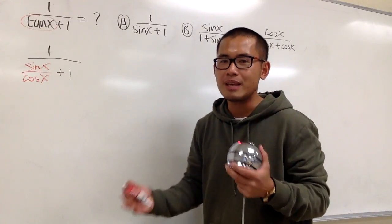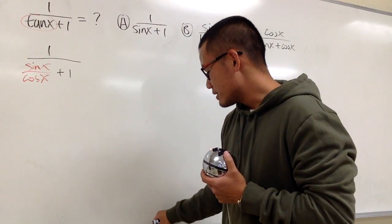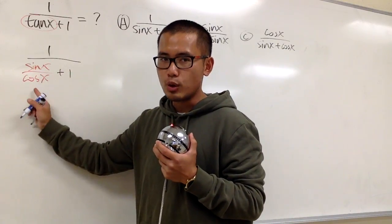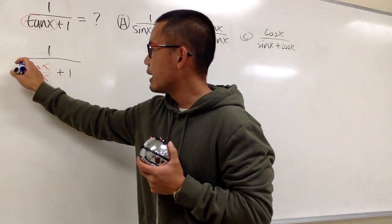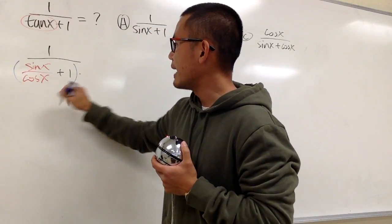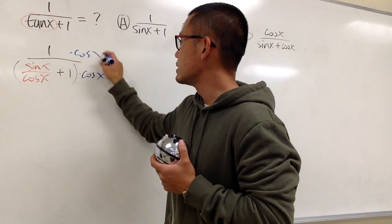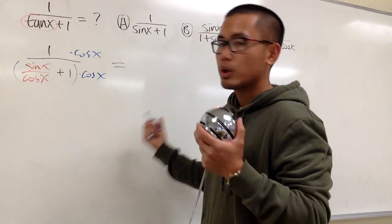but we still do it with the same principle. That means I will just go ahead, and you see the denominator of the small fraction is cosine x. I will multiply the entire bottom by that cosine x. And we do the same on the top, of course. And let's see what we have.